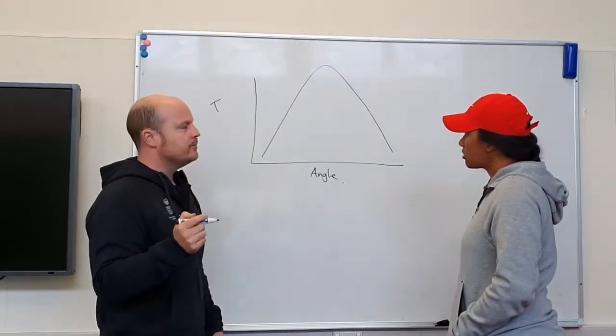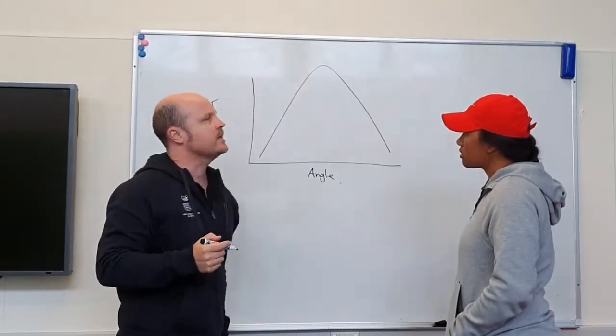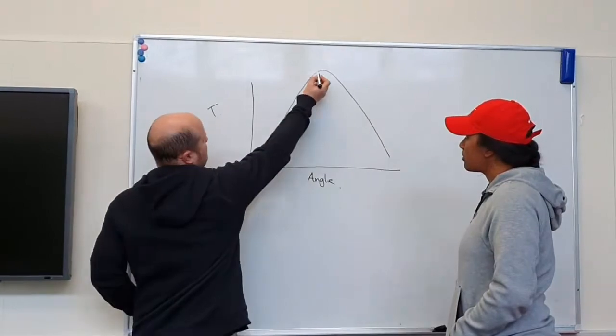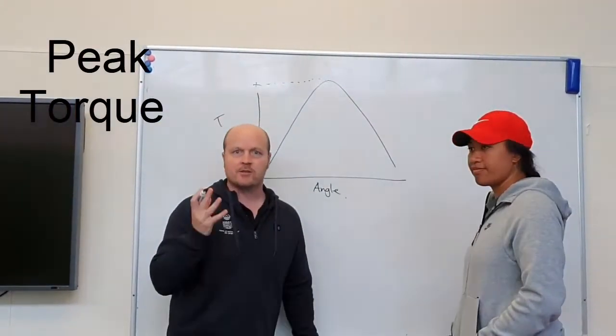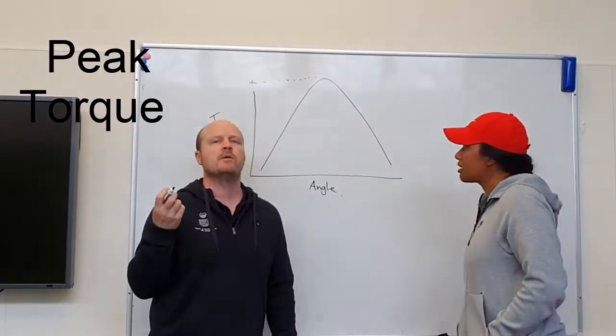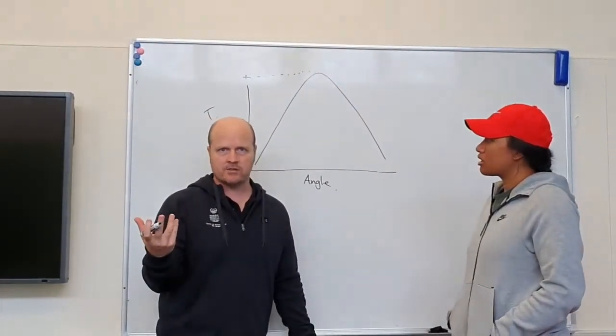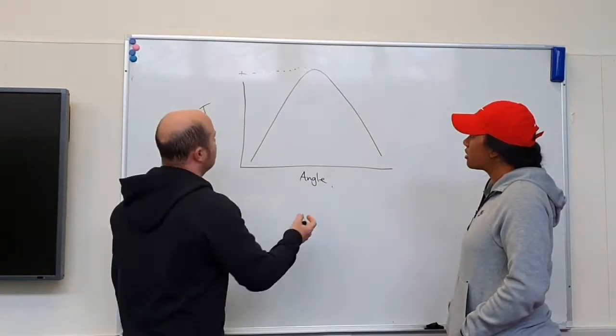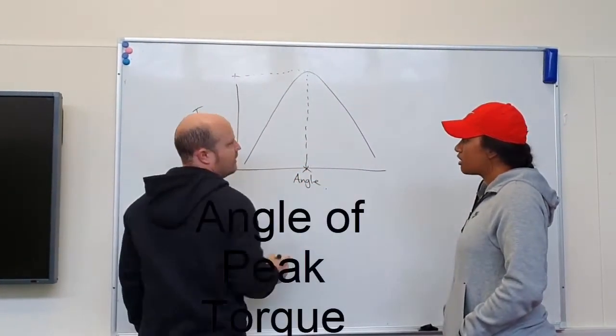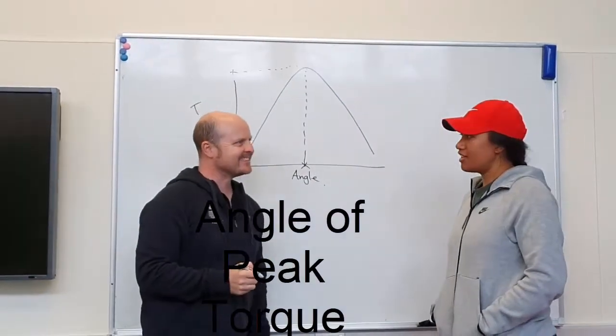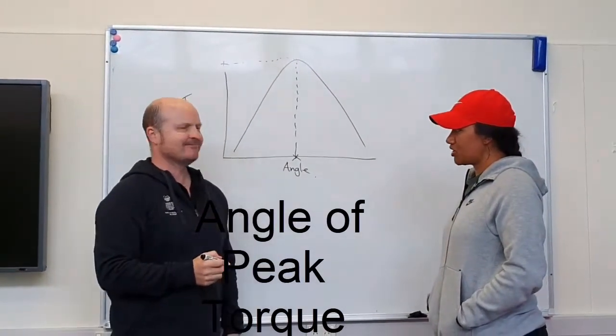So what information do we get from this graph? The peak torque. So that's the maximum torque or strength someone can generate. And if we drop this down, what do we get here? At what angle they develop that peak torque.